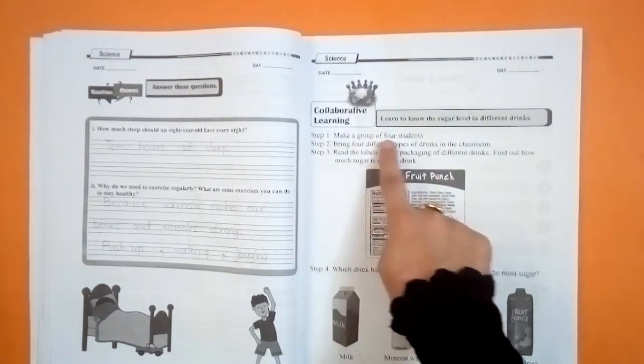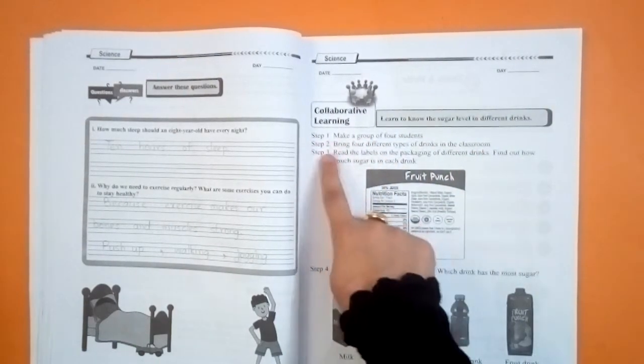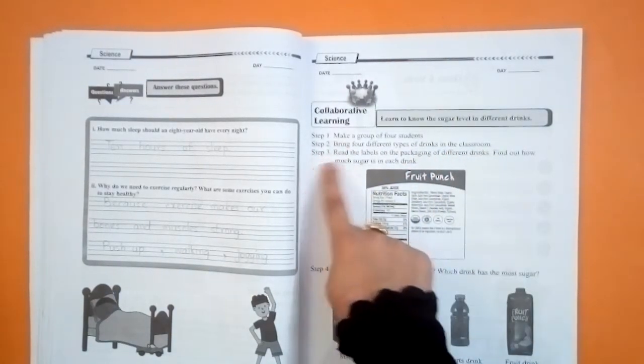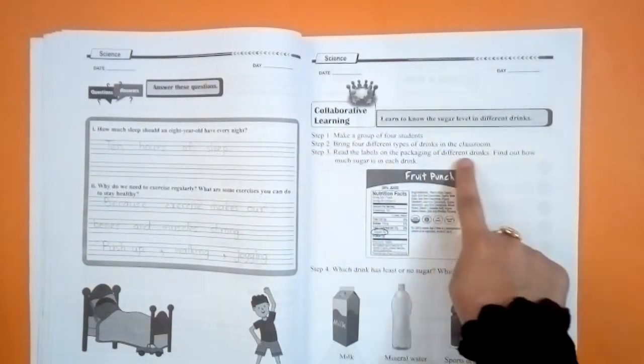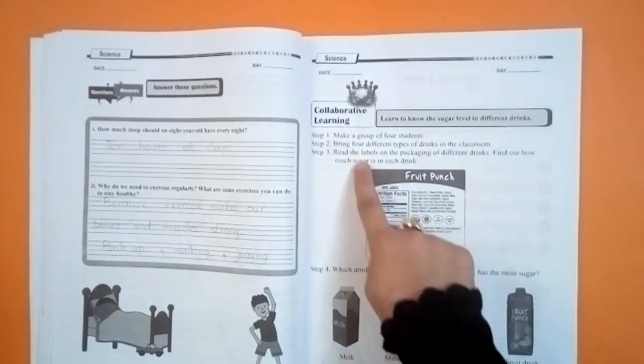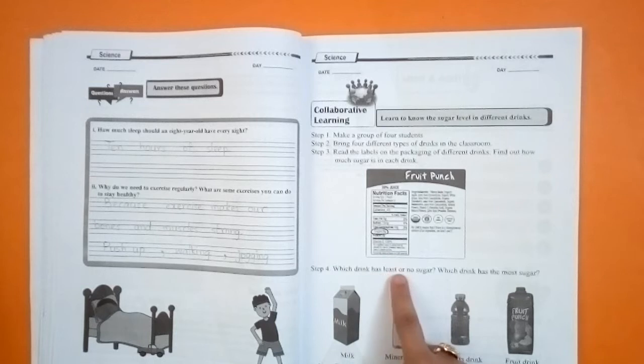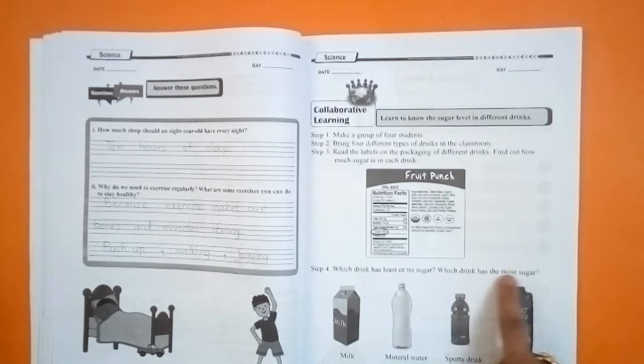Step 1. Make a group of 4 students. Step 2. Bring 4 different types of drinks in the classroom. Step 3. Read the labels on the packaging of different drinks. Find out how much sugar is in each drink. Step 4. Which drink has least or no sugar? Which drink has the most sugar?